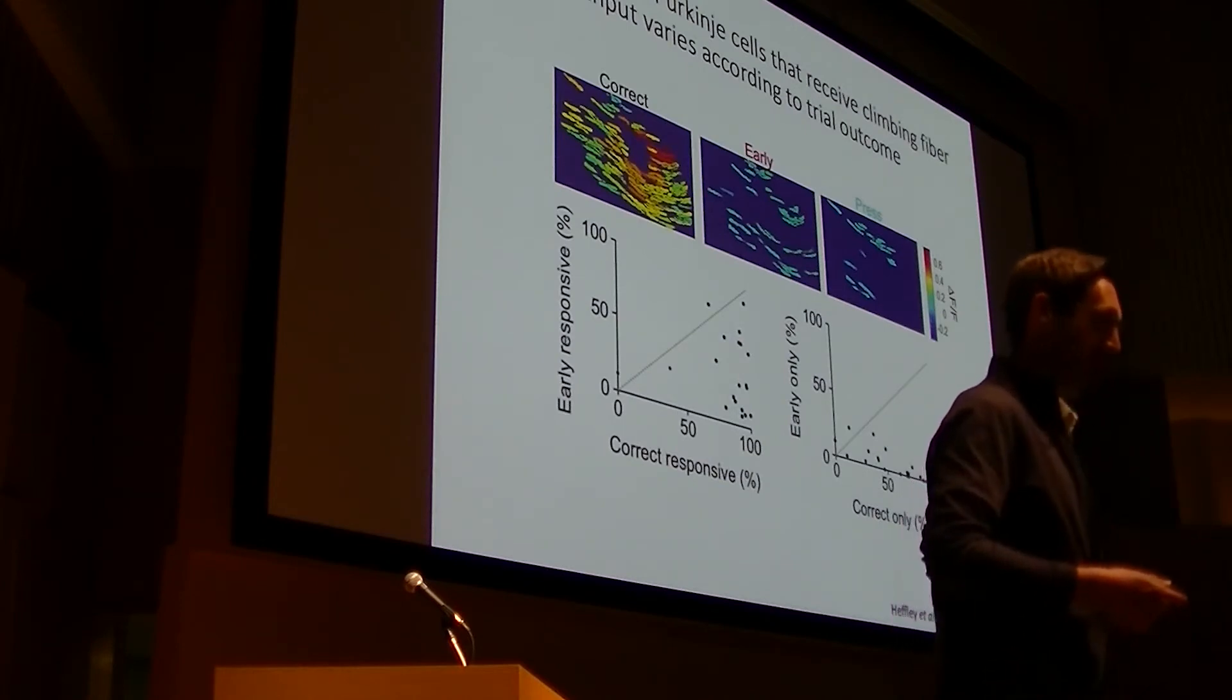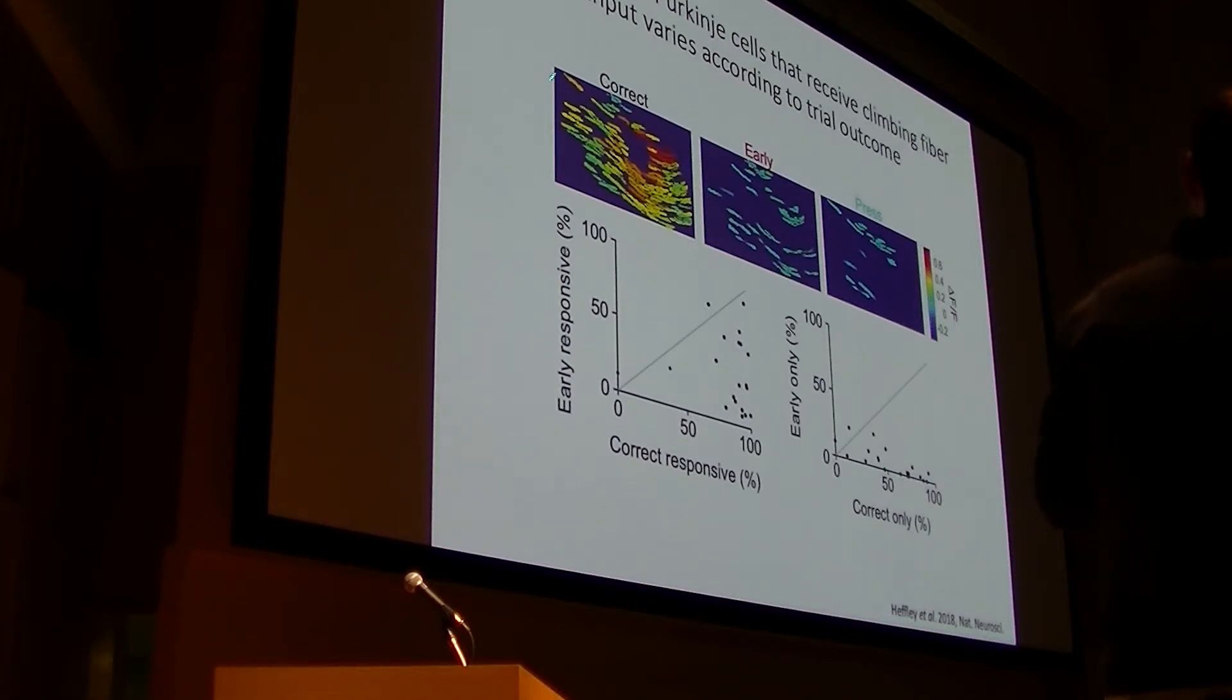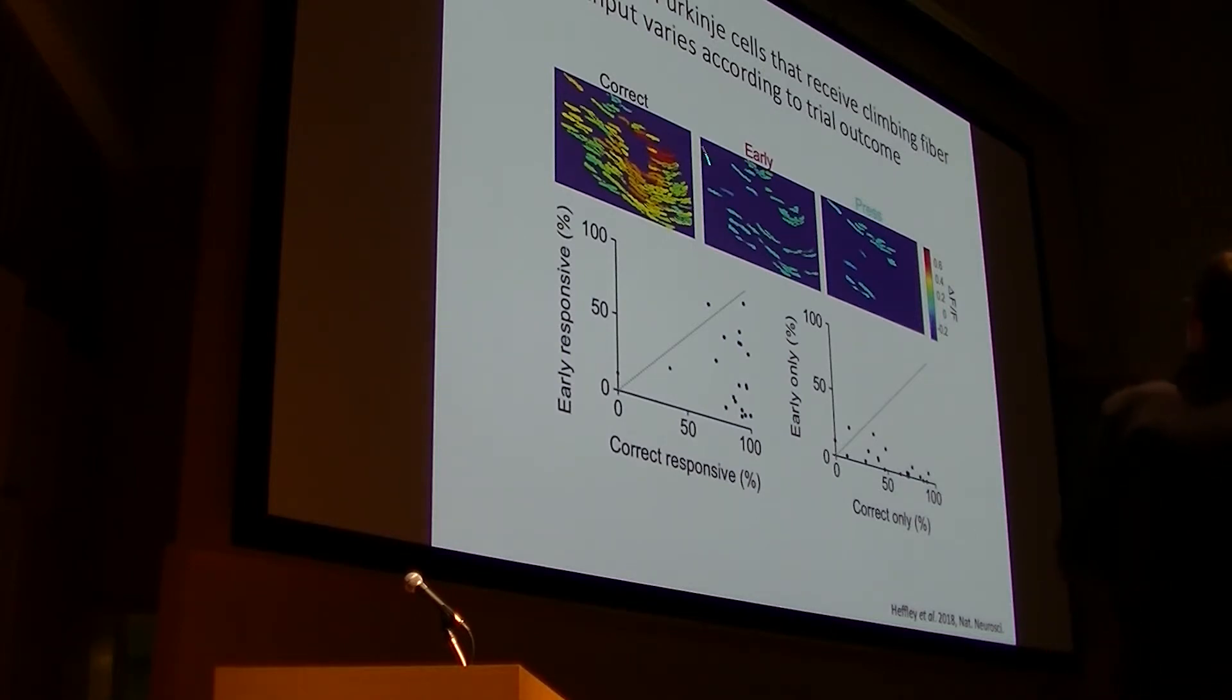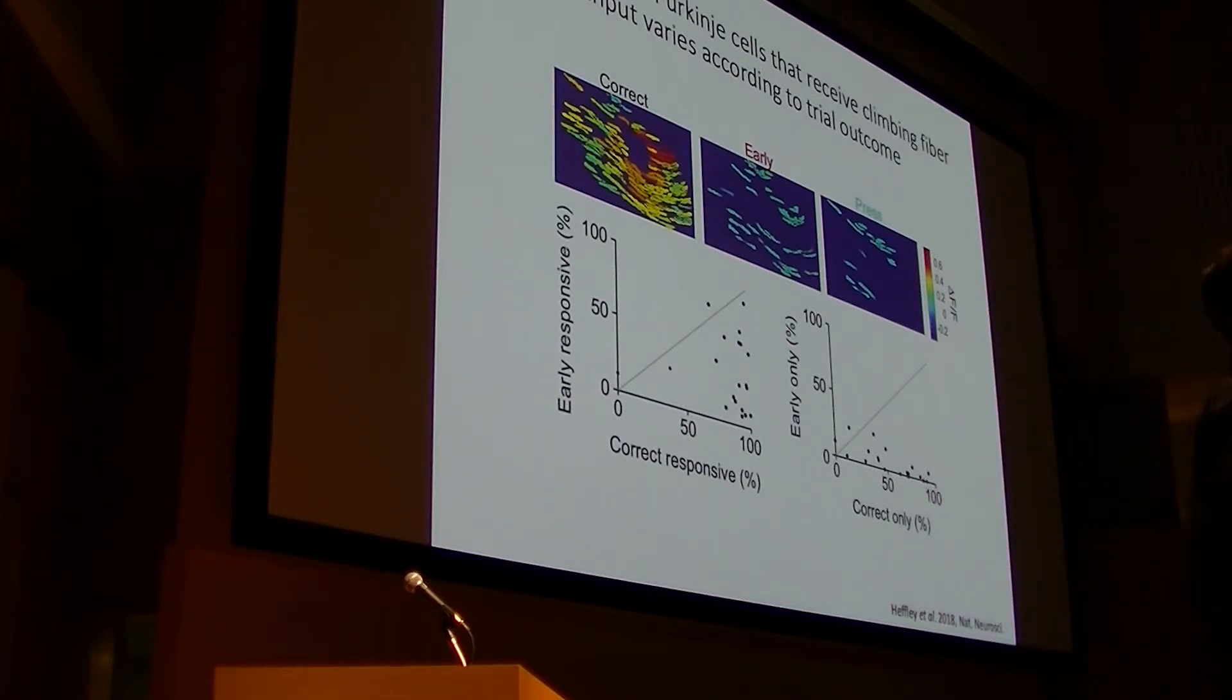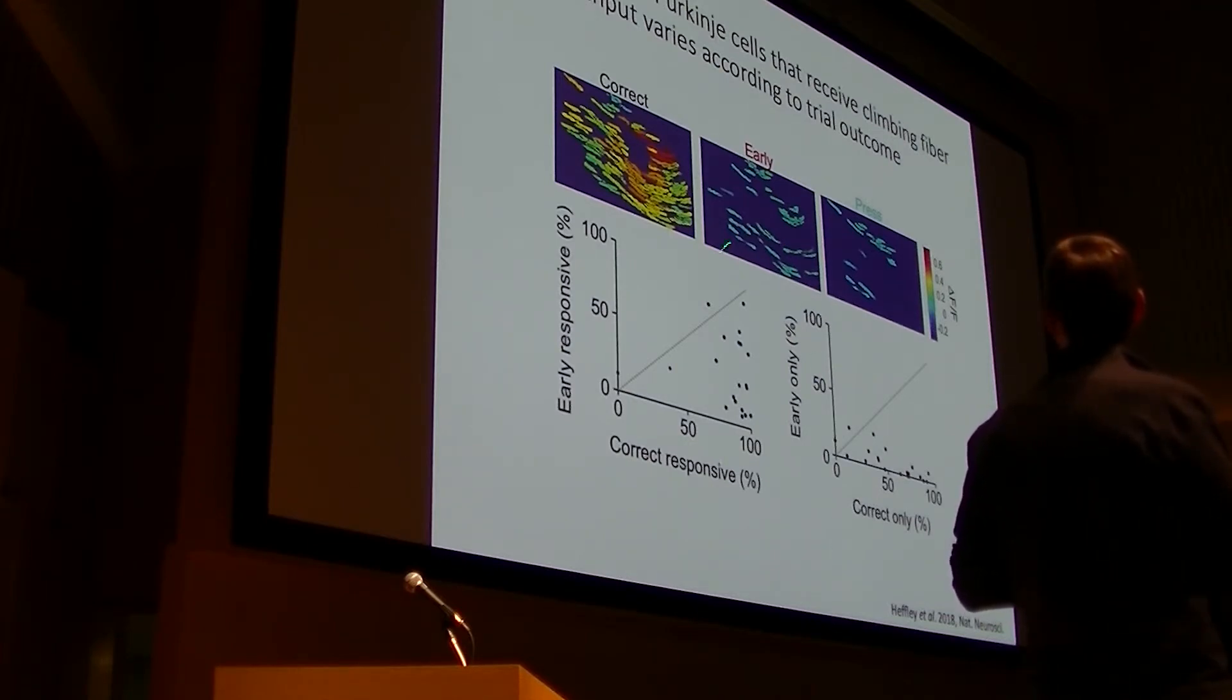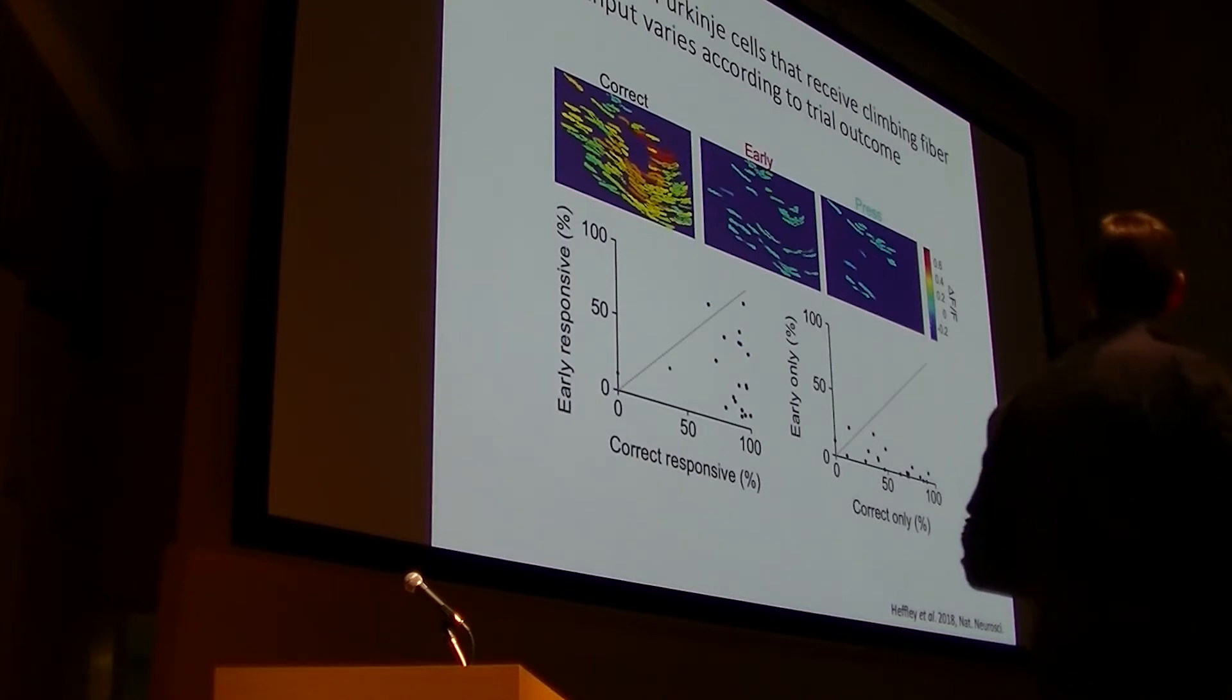Okay, so that's what we did. And the initial result that we found is shown here in the population average. What we've done now is stratified trials in our task according to their outcome. So here is when an animal has correctly timed its movement. Here where the animal has mistimed its movement. And by that I mean correctly released the lever in response to the visual cue or incorrectly released the lever prematurely. And here's where the animal presses the lever. What's immediately evident is that there are many more Purkinje cells receiving climbing fiber input when animals correctly timed their movement, much more so than when animals mistimed their movements.